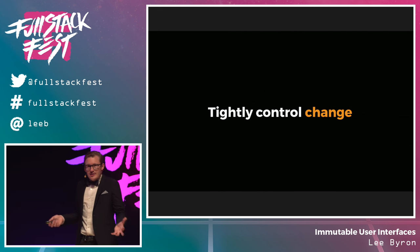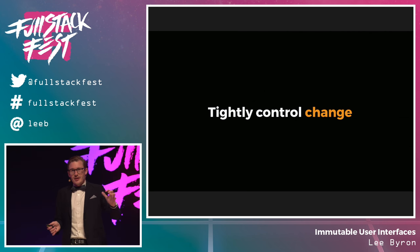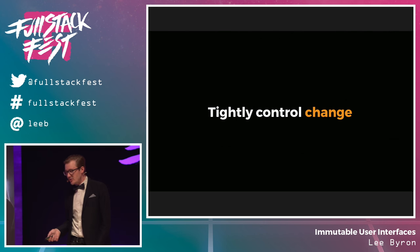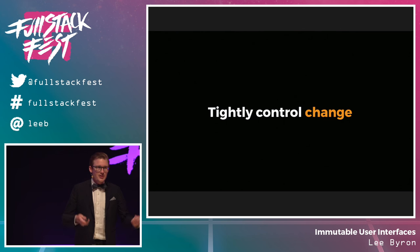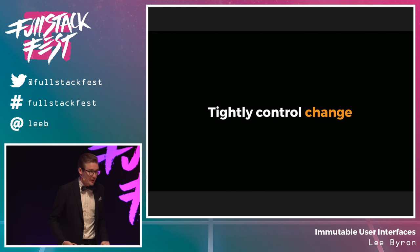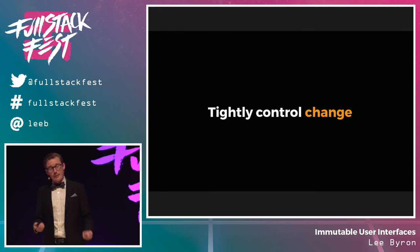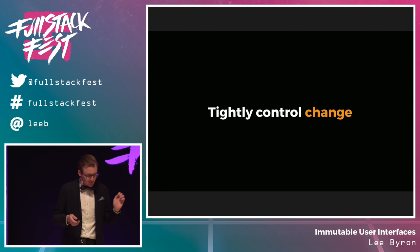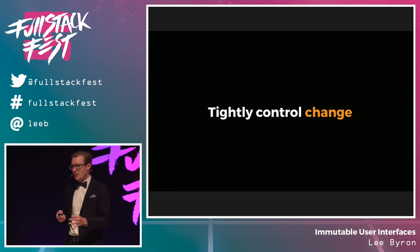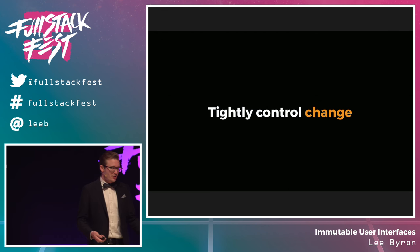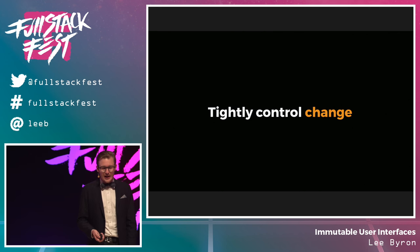Immutable UI doesn't mean that our screen is frozen and you can't do anything with it — we're not going back to 1998 web pages. Instead it means we're going to embrace the principle of immutability at each point in our application's architecture. That means we can control exactly where changes occur, and then leverage that to apply techniques like memoization and time travel to build faster, more robust apps.